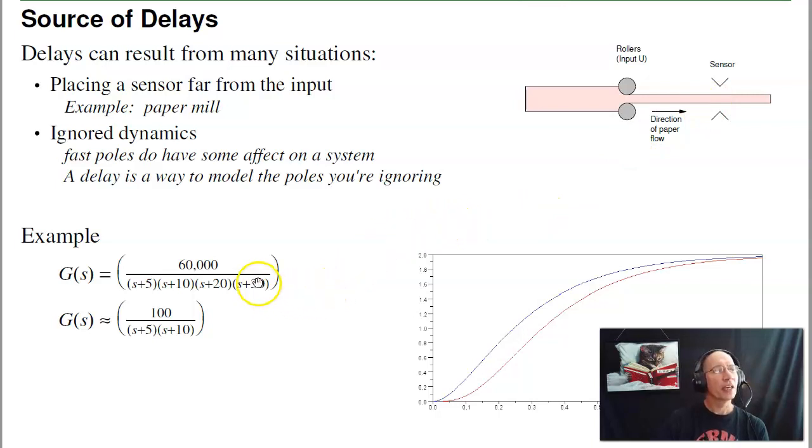A second way is if you take a high order system and use a low order approximation. For example, here I have four poles. If I keep the dominant two poles at minus 5 and minus 10, I get almost the same step response with the same settling time, overshoot, and DC gain, but there's extra delay. That extra delay is due to those poles I ignored. A more accurate model would be to take the second order approximation and delay it, giving you two poles plus a delay.